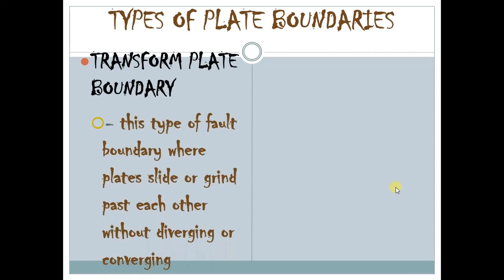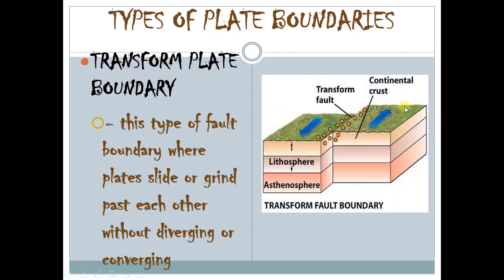The last type of plate boundary is the transform plate boundary. This type of fault boundary is where plates are sliding or grinding past each other without diverging or converging. So instead of moving away from each other or moving towards each other, the plates at these boundaries just grind past each other. As we can see in the picture, the arrows are moving in opposite directions, but not creating a divergent or convergent plate boundary. We call this transform fault boundary.